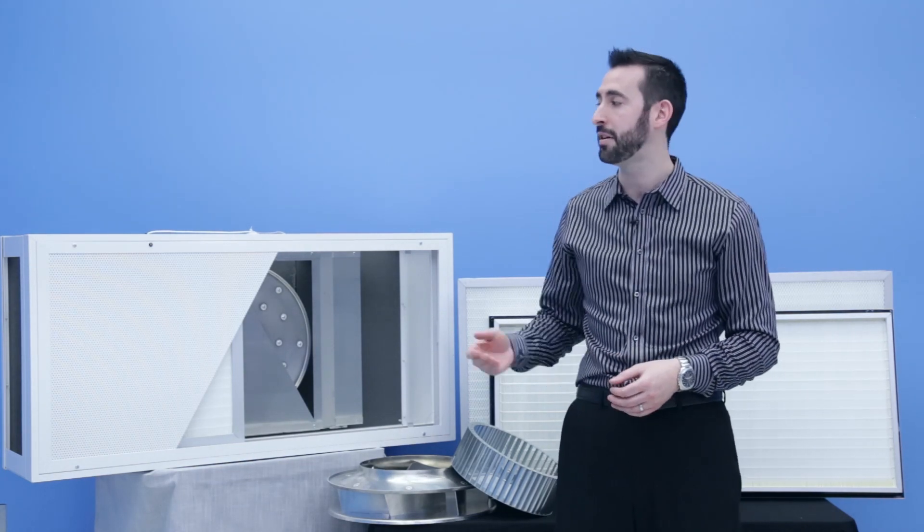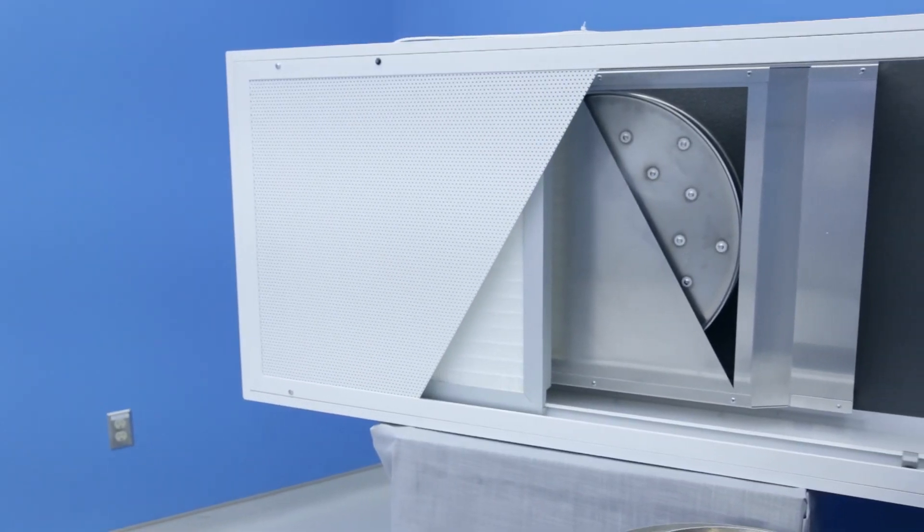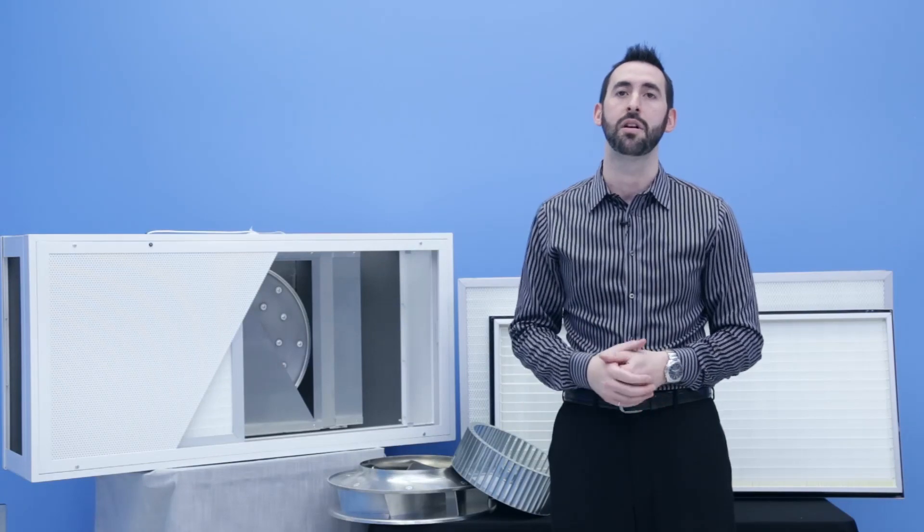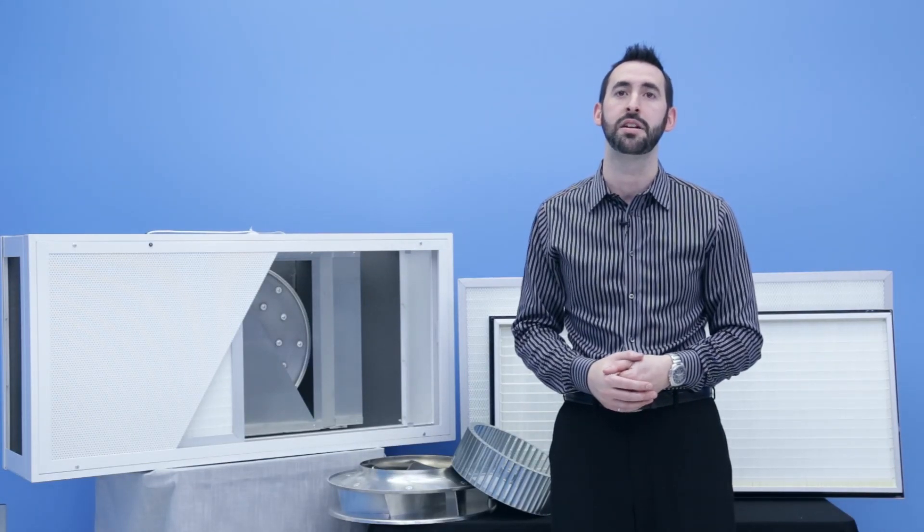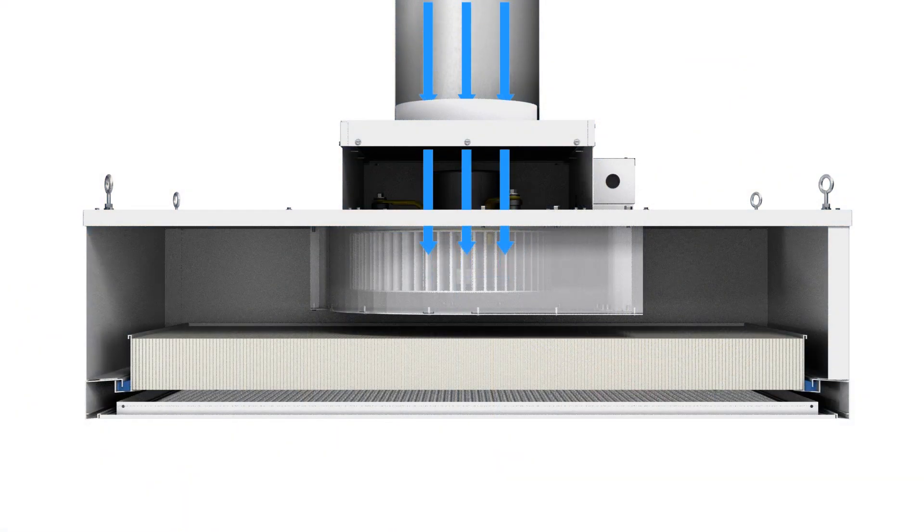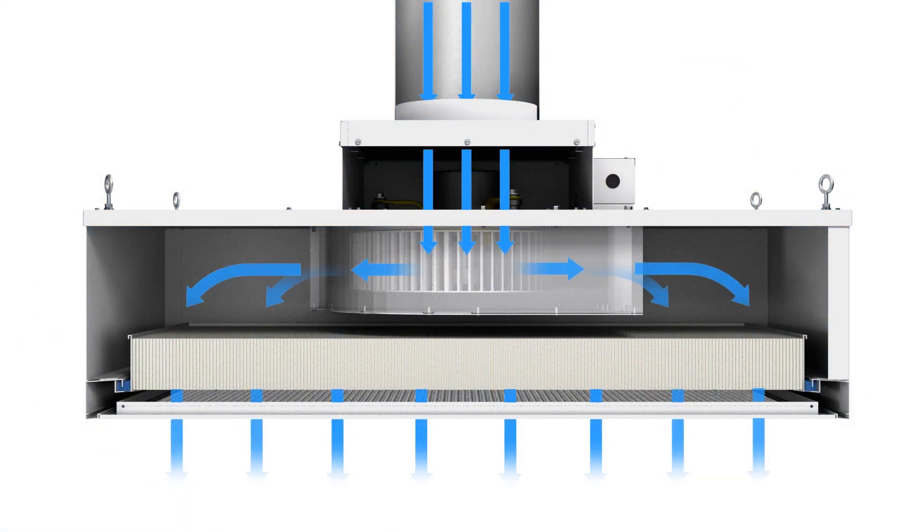A fan filter unit, or FFU, is essentially a laminar flow diffuser with an integrated fan and motor. The fan and motor are there to overcome the static pressure of the internally mounted HEPA or ULPA filter. This is beneficial in retrofit applications, where the existing fan power from the air handler is insufficient to overcome the filter pressure drop.